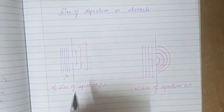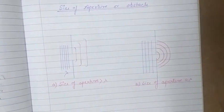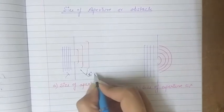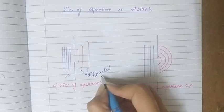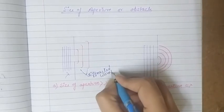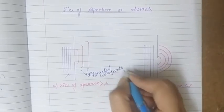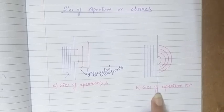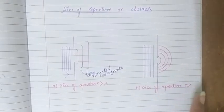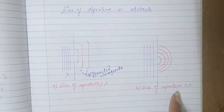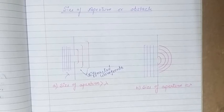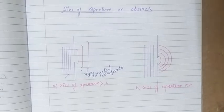We are incidenting plane wavefronts of wavelength lambda on the aperture or obstacle. When the size of the aperture is much greater than the wavelength lambda, the amount of bending we obtain in the diffracted wavefronts is very small — small in comparison to that obtained when the size of the aperture is comparable to the wavelength.